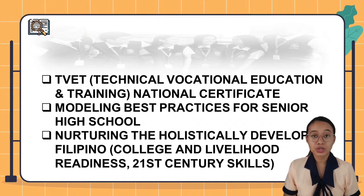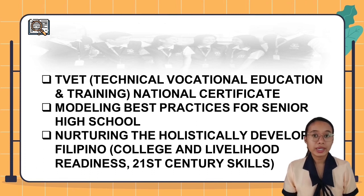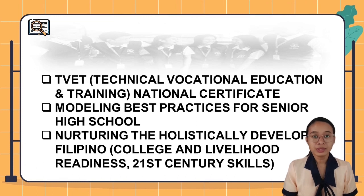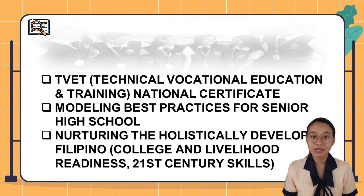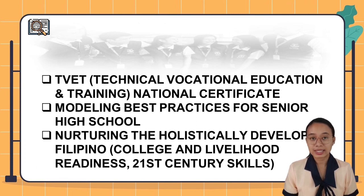Technical Vocational Education and Training national certificates: after finishing grade 10, a student can obtain certificates of competency or a National Certificate Level 1. After finishing a technical vocational livelihood track in grade 12, a student may obtain a National Certificate Level 2 or NC2, provided they pass the competency-based assessment of the Technical Education and Skills Development Authority, or TESDA. The NC1 and NC2 improve employability of graduates in fields like agriculture, electronics, and trade.